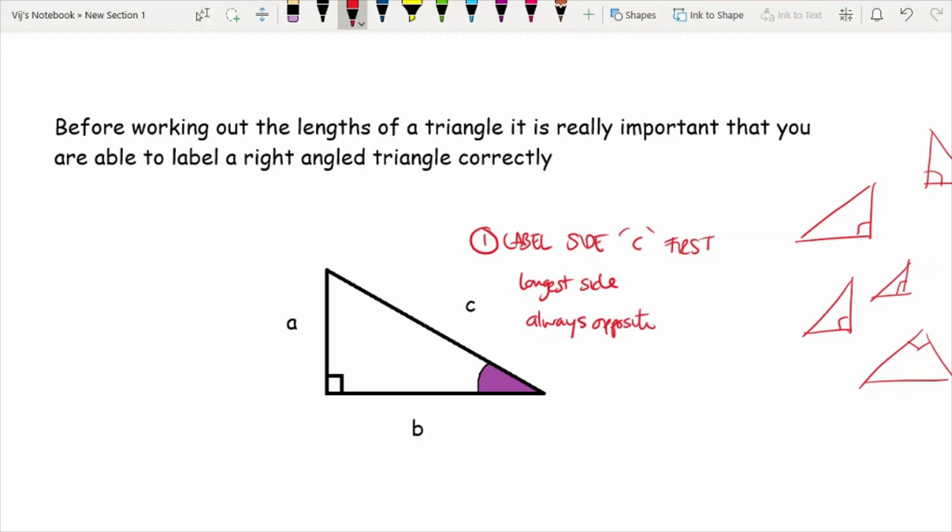Now, in any right angle triangle, they'll always represent the right angle with a little square. So, it's always opposite 90 degrees. So C should always be your first point when it comes to labeling.